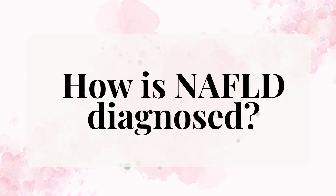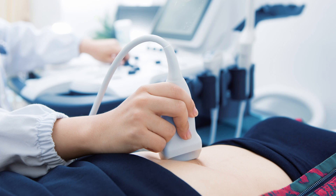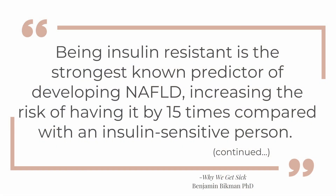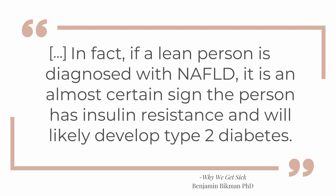How is non-alcoholic fatty liver disease diagnosed? Fatty liver is generally asymptomatic in earlier stages, but certain blood work markers can indicate fatty liver, and ultrasounds can identify if the liver is enlarged. Dr. Benjamin discusses in Why We Get Sick that being insulin resistant is the strongest known predictor of developing NAFLD, increasing the risk by 15 times compared with an insulin-sensitive person. Critically, while almost all obese individuals have NAFLD, even lean people who are insulin resistant have a substantially greater likelihood of developing the condition — and if a lean person is diagnosed with NAFLD, it is an almost certain sign of insulin resistance and likely future type 2 diabetes.